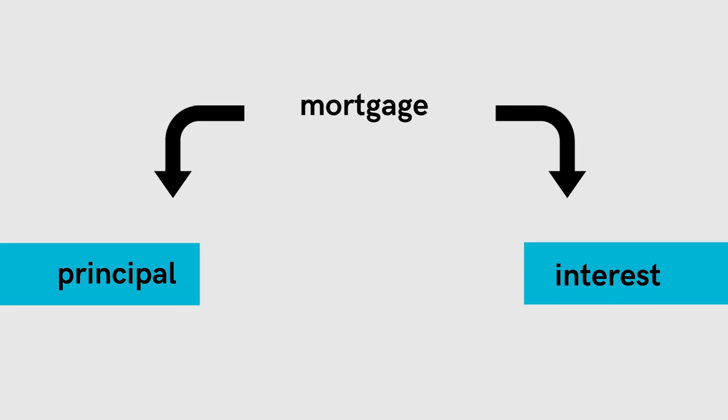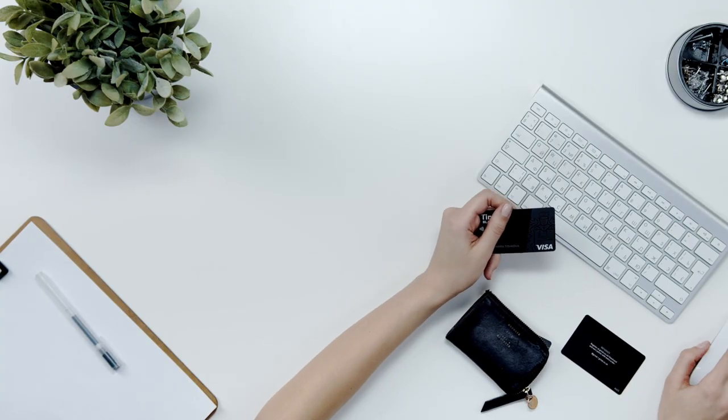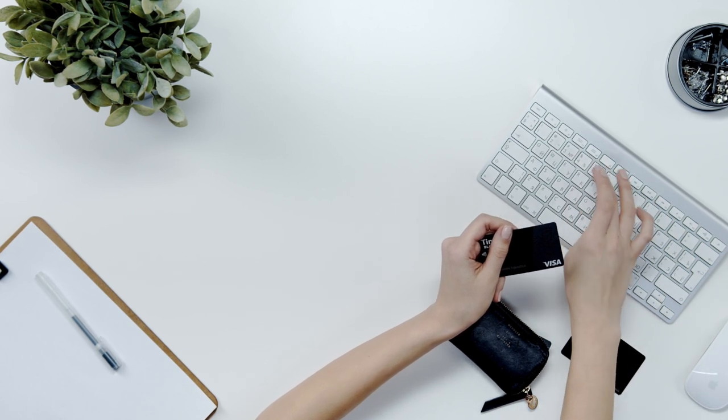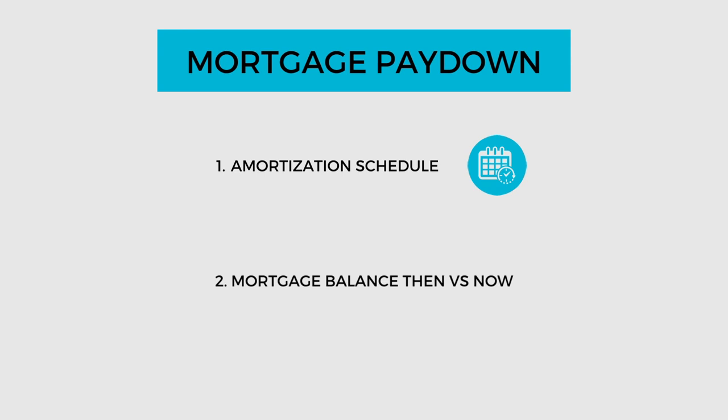The second category we should include is mortgage paydown. If you have a mortgage on a property, your mortgage payment is broken down into two categories: principal and interest. Interest is the cost to service the loan — what we have to pay the bank every year. But the principal amount is also included in your mortgage payment, which reduces the amount of money you owe on that mortgage every year. This is why mortgages are amortized over a 25-year span — the idea being that if you make your mortgage payments for 25 years, the principal paid down every month brings your mortgage balance to zero. The easiest way to calculate mortgage paydown is to look at an amortization schedule, or compare the mortgage balance when you purchased the property versus what it is now.